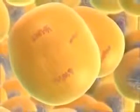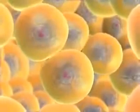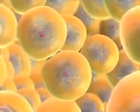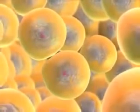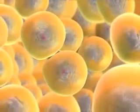Nuclear envelopes reform, and each daughter cell divides into two cells. We started with a single diploid cell, and now that meiosis is complete, we have four haploid cells, cells with a single set of chromosomes. These haploid cells mature into gametes.